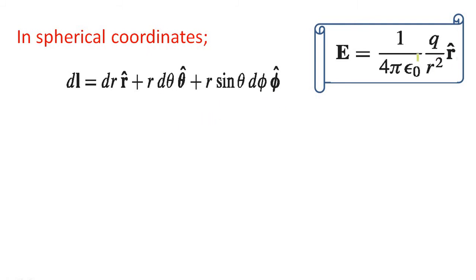Now we need to find E dot dL. Here the unit vector is r cap. In case of E the unit vector is r cap. In case of dL you have unit vector r cap, theta cap and phi cap.